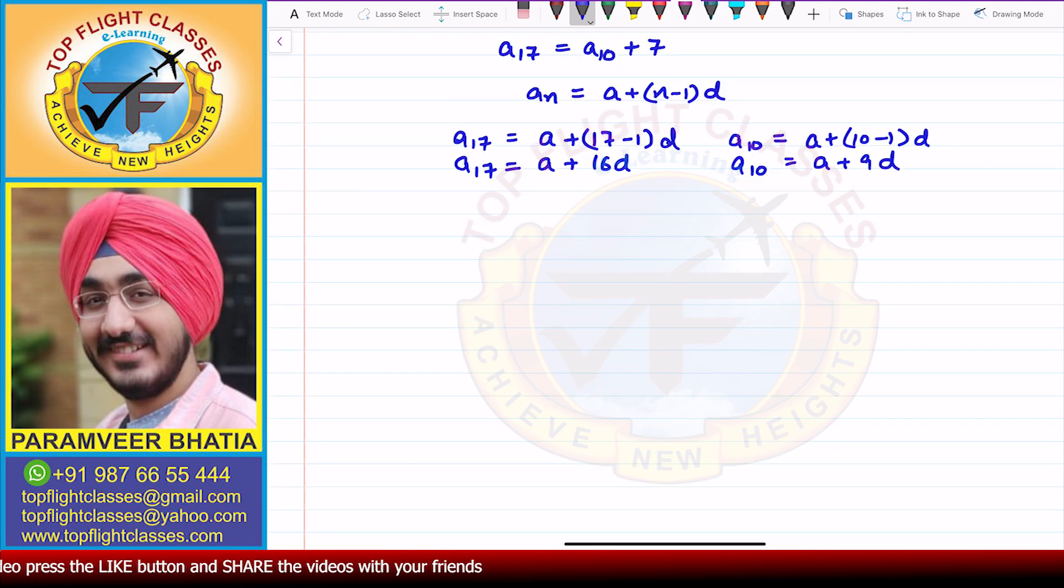If we put these values in this equation, what I will get is a plus 16d equals a plus 9d plus 7.